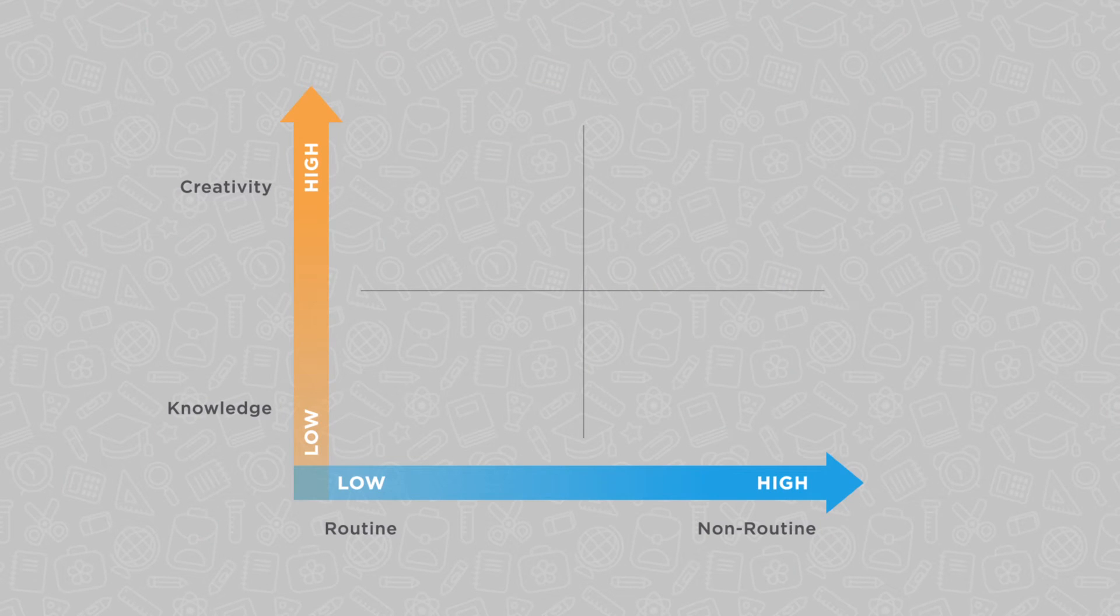We can use this rigor relevance chart to analyze the types of math content students are asked to engage with. Vertically, we have an axis of thinking, from low-level regurgitation of memorized facts to high-level creative problem solving, and horizontally we have an axis of application, from routine to non-routine questions.